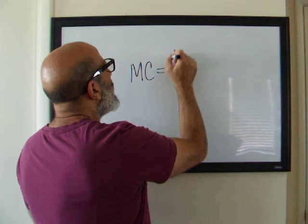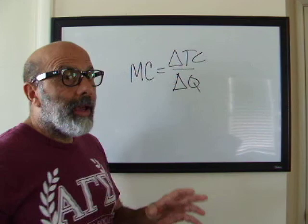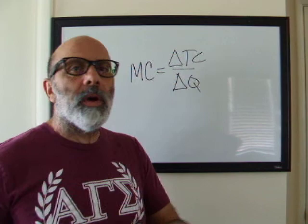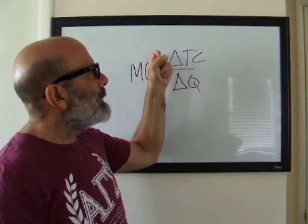But marginal cost is very general. Marginal cost tells us this is how much our total cost changes when we change quantity. That's a great function, but it doesn't tell us where did that cost come from, from what inputs did that cost come from. It just says your output changed and your cost changed.